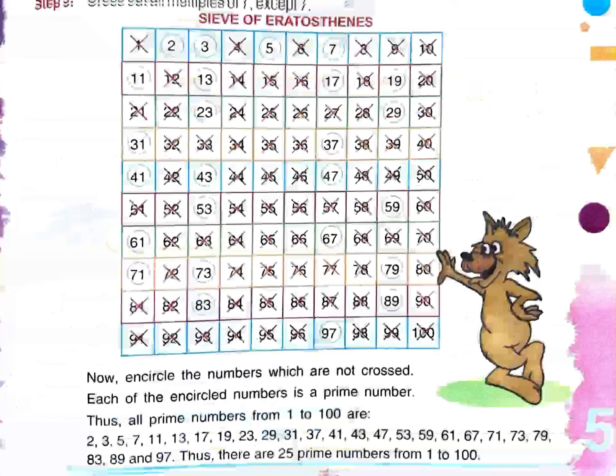This is called the Sieve of Eratosthenes. There is a grid of numbers from 1 to 100. To find prime numbers, we first cross out 1 because it is a unique number — it does not come in the category of prime or composite.